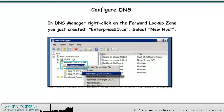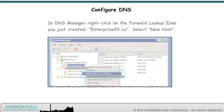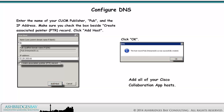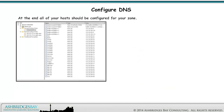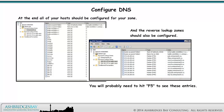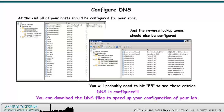In DNS Manager, right-click on the Forward Lookup Zone you just created, Enterprise20.ca, and select New Host. Enter the name of your CUCM publisher (or pub) and the IP address. Make sure you check the box beside Create Associated Pointer Record. Click Add Host, then click OK. Add all of your Cisco collaboration app hosts. At the end, all of your hosts should be configured for your zone, and the reverse lookup zones should also be configured — you will probably need to hit F5 to see these entries. DNS is configured. You can download the DNS files to speed up your configuration of your lab.